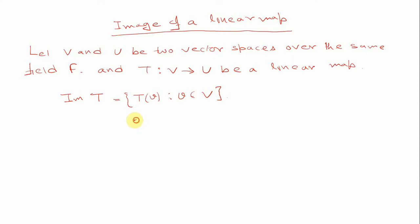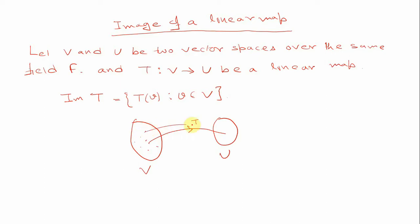Graphically, you can draw it like: this is V and this is U. Now T is a transformation from V to U. If you take all elements of V, where they are mapping — all these points are going. So this is where all the elements of V are mapping, and this is the image of T. You can see this is basically a subset of U, and it also forms a subspace.